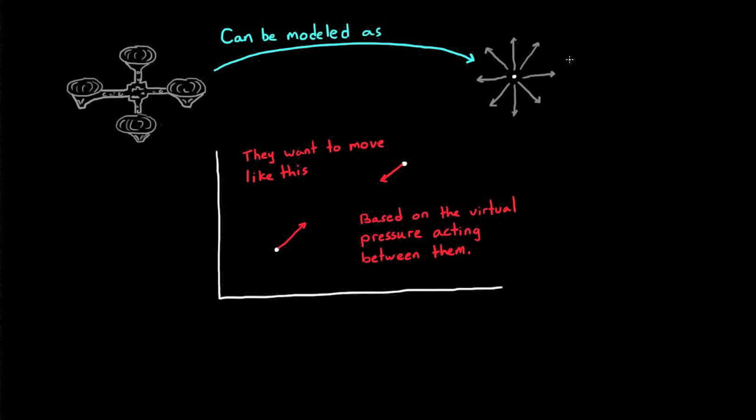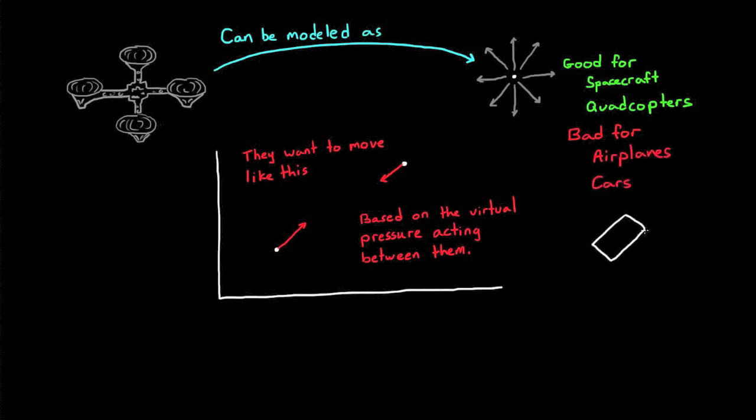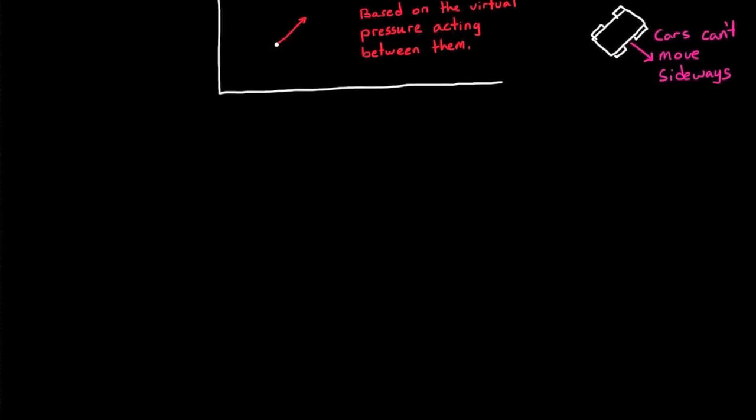Up to this point, we've modeled the robots as particles, which allowed them to move in any arbitrary direction. This is good for, say, spacecraft and quadcopters, but it's not a very good model for aircraft and cars because they can't move sideways. We need a new model, a non-linear model that restricts the algorithm from requesting that the robot moves in a way that it physically can't.